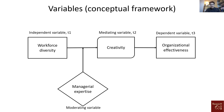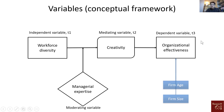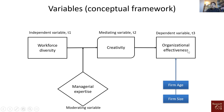For the control variable: we are saying that workforce diversity, creativity, and managerial expertise explain changes in organizational effectiveness. But there could be many other variables that also affect organizational effectiveness — by default, variables like firm age or firm size, because older or larger firms are likely to be more effective. So we should control for these variables and then see if the independent, moderating, and mediating variables still have an effect on the dependent variable.